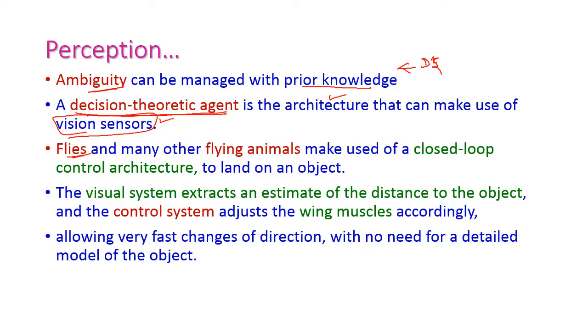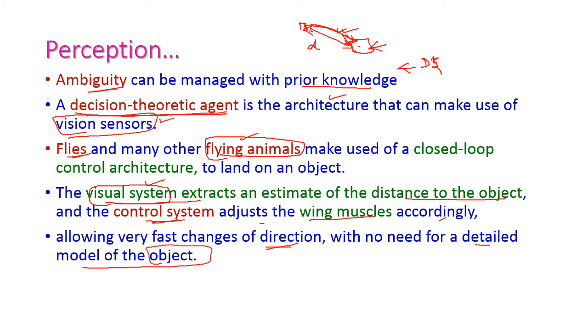Flies or flying animals, like the agent, try to land on the object which is on the ground. Our decision theoretic agent has a visual system which extracts an estimate of the distance to the object. It also has a control system which adjusts the wing muscles accordingly. Based on the distance, the speed will be adjusted and the direction controlled, with no need for a detailed model of the object. We need not worry about the structure of the object.